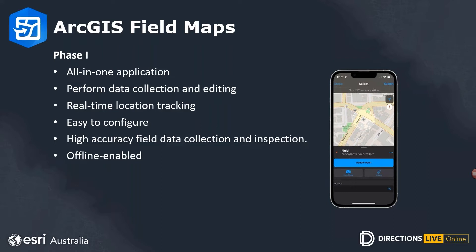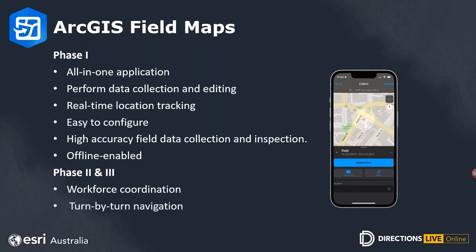The features just mentioned are part of the Phase 1 release for ArcGIS Field Maps. Phase 2 is the ability to coordinate your workforce, intended to replace ArcGIS Workforce, including creating and assigning tasks to field workers with a to-do list directly within your map. Phase 3 will deliver the ability to launch consumer navigation apps like Apple Maps or Google Maps directly from Field Maps, bringing advanced turn-by-turn navigation using your own map content. There is no release date for Phases 2 or 3 presently.